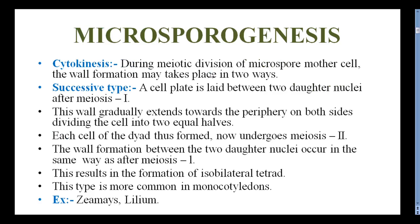During Microsporogenesis, meiotic division takes place. Cytokinesis means division of the cytoplasm present in the cell. During the meiotic division of microspore mother cells, the wall formation may take place in two ways. The first is successive type and the second is simultaneous type.